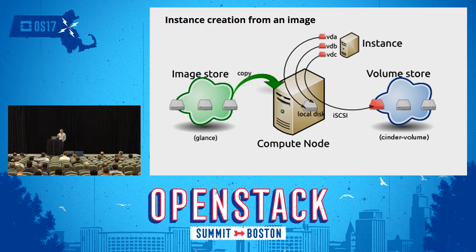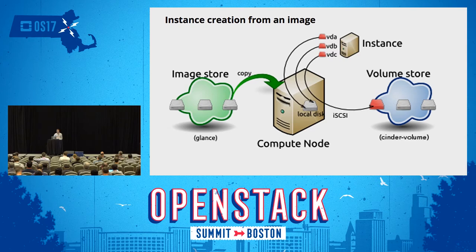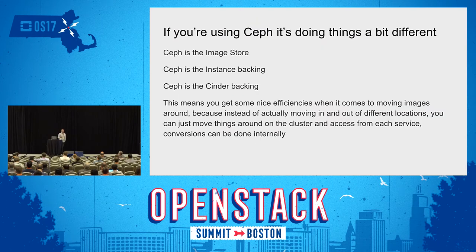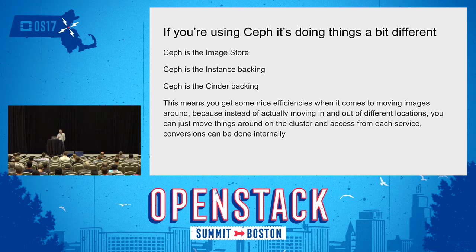Here's a depiction of how a standard traditional OpenStack deployment works with volumes. You've got your image store, you have Glance, you have your compute node. You pull that image over from the image store, put it on the compute node, boot off of it, and then attach a volume from Cinder. Now, how many people are using Ceph in a deployment? The thing about Ceph that's kind of interesting is it can be an object store, a block store, and a file system store all at the same time. Since it can be all of those things, it can also be the backing for all of the services in OpenStack at the same time, giving you a lot of efficiencies in terms of utilization and moving things around.